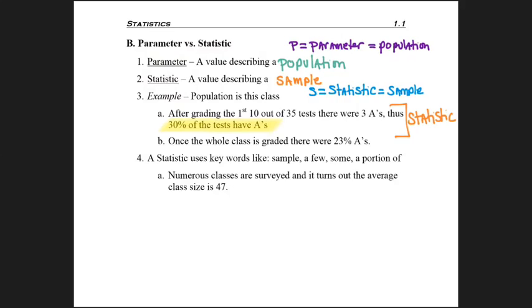It's a statistic. The reason it's a statistic is that if you remember, I have to know what my population is first. And although I did define the population as this class, we didn't know how many students were there, but it does say out of 35 tests. And since 10 is not all of the 35, I have a sample. So therefore, my 30% number is a statistic.